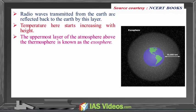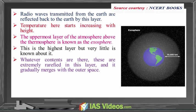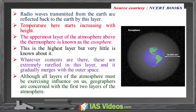The uppermost layer of the atmosphere above the thermosphere is known as the exosphere. This is the highest layer but very little is known about it. Whatever contents are there are extremely rarefied, and it gradually merges with outer space. Although all layers of the atmosphere must be exercising influence on us, geographers are primarily concerned with the first two layers of the atmosphere.